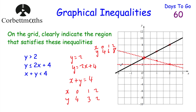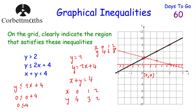Going back to our inequalities: y > 2, so we reject below the line y = 2 — just little dashes to show I'm rejecting below that line. Next, y ≤ 2x + 4: choosing the origin (0, 0) and substituting in, we get 0 ≤ 2(0) + 4, so 0 ≤ 4 — yes. The origin satisfies the inequality, so we accept below that diagonal line and reject above it — marking little lines above to show what we're rejecting.